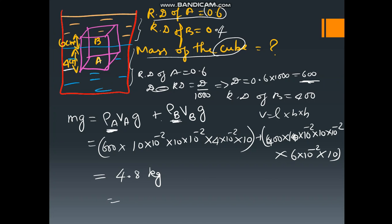If you want to convert to grams, 4.8 kg × 1000 = 4800 grams — wait, that is 4800 g. So the mass of the cube is 4.8 kg or 4800 grams. I hope you liked this lecture. If you liked this lecture, please subscribe to Kishore's Neet Paata Sala. Thank you.